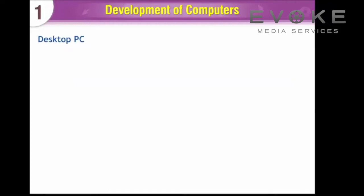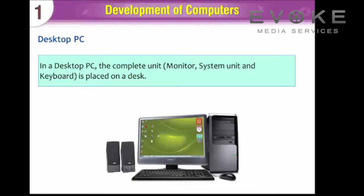Desktop PC. In a desktop PC, the complete unit — monitor, system unit, and keyboard — is placed on a desk. Components include: speaker, monitor, system unit, keyboard, and mouse.